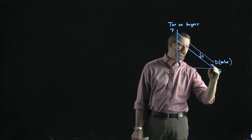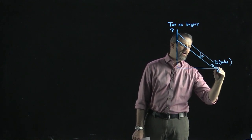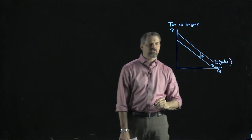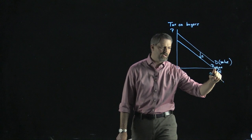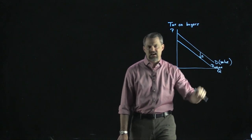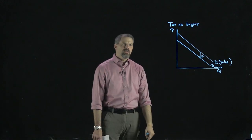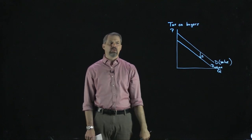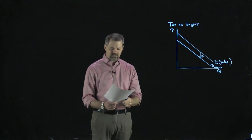So the tax shifts your willingness to pay down by the amount of the tax T — that's your demand curve with the tax. A tax on buyers reduces willingness to pay by the amount of the tax.